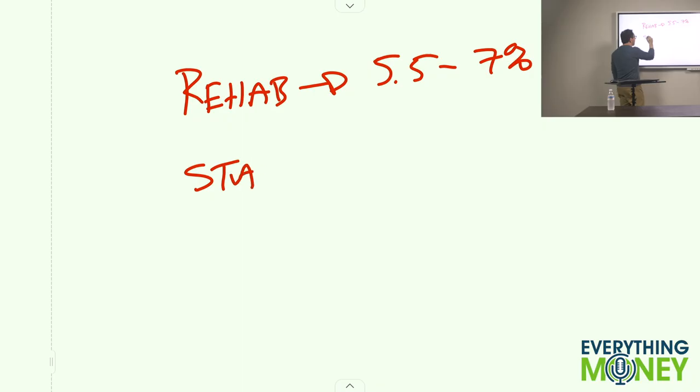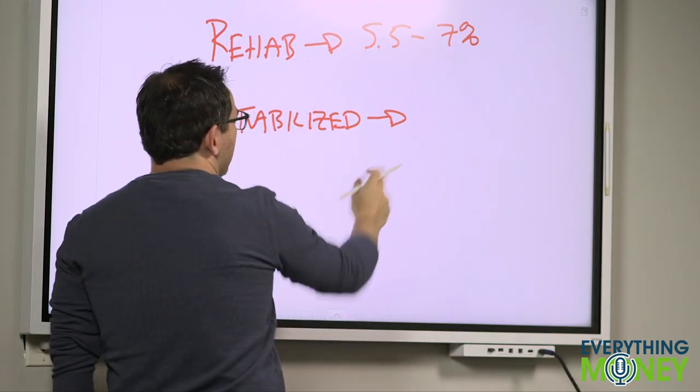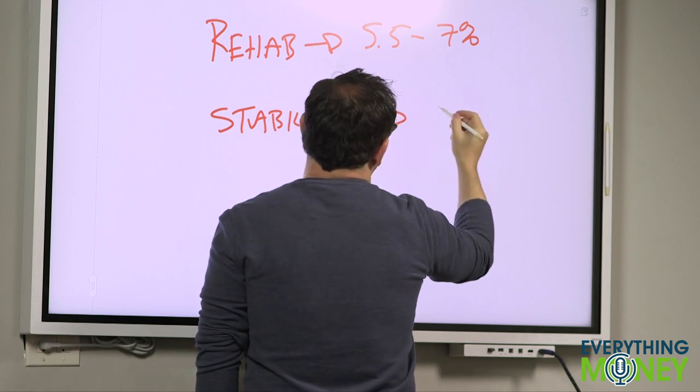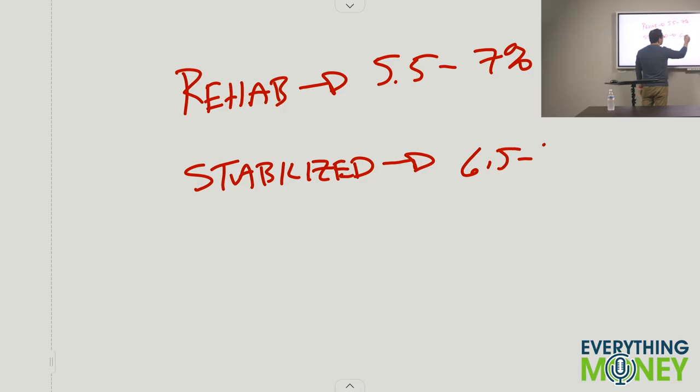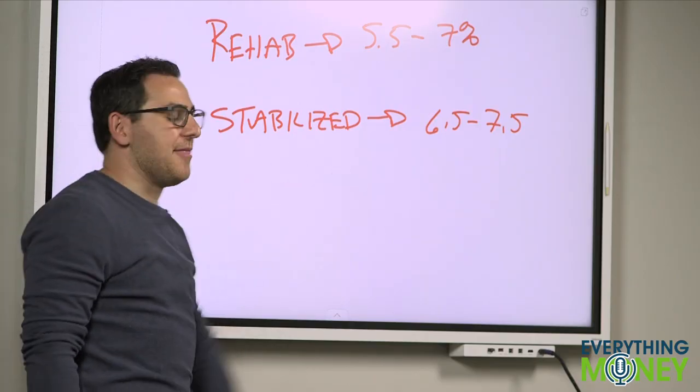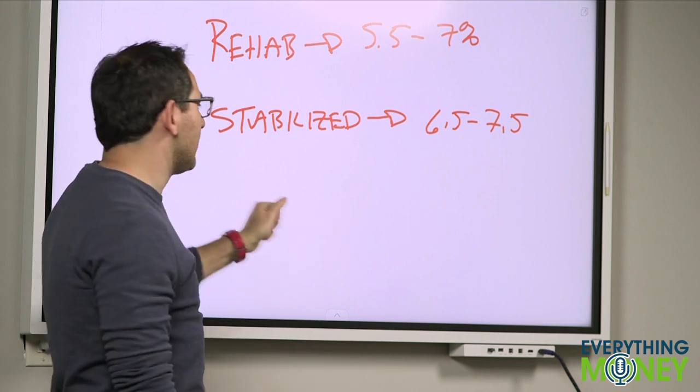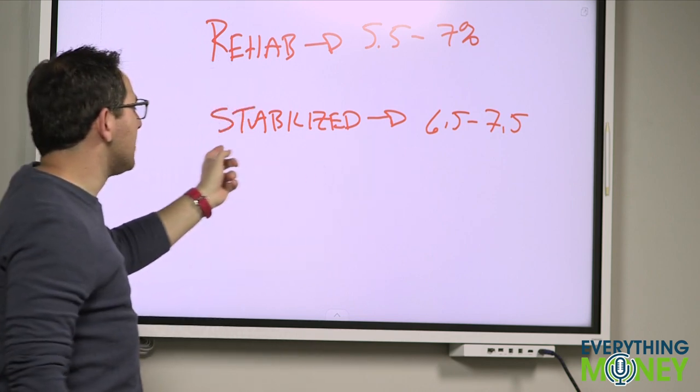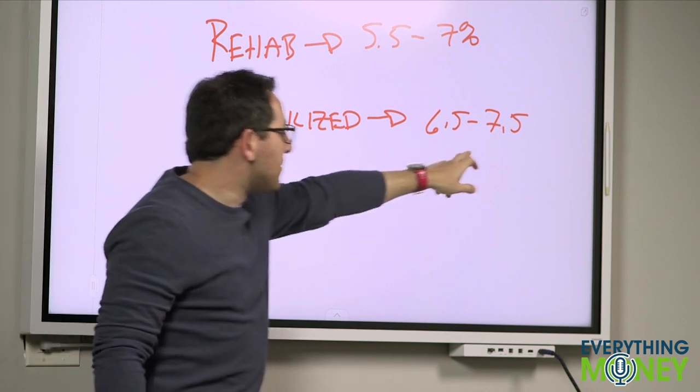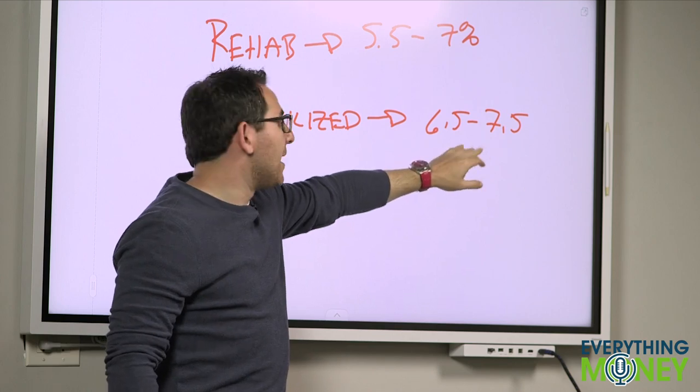If I'm buying a stabilized property, now what's a stabilized property? One that is already full. I don't need to do anything to it. I don't need to rehab it. The problem is I don't buy these very often because they need less work, so they're easier. And then people will pay more. I want to buy around 6.5% to 7.5%. And in this market, that's very difficult because people want to pay through the nose and they all think they can get more rents. So for one that has not much upside, I have to pay less money for it, pay a higher cap rate.